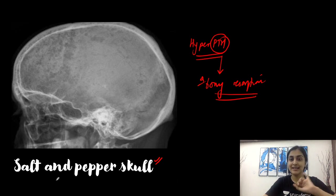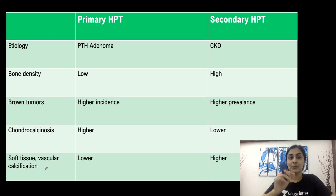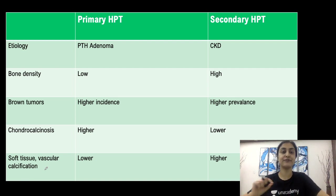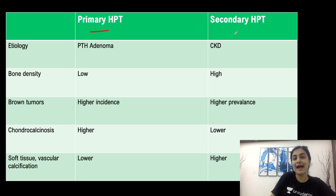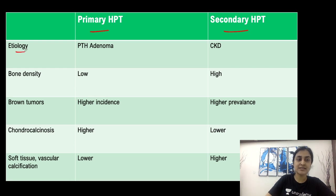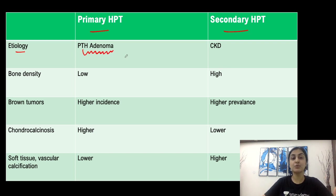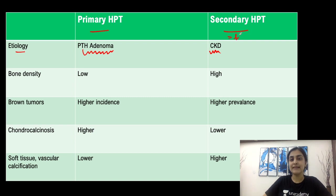With that background, let's consolidate the appearances of hyperparathyroidism and the key differences between primary and secondary hyperparathyroidism. The most common cause of primary HPT is a parathyroid adenoma, whereas chronic kidney disease (CKD) gives rise to secondary HPT — also known as renal osteodystrophy.